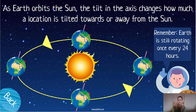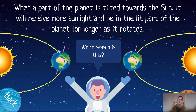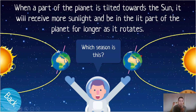We spin within those 24 hours as well as moving around the sun, so let's look at how that affects us in terms of the seasons. When part of the planet is towards the sun, it's going to receive more sunlight, therefore it's going to be hotter, and that part of the planet will be lit up for longer as it rotates. So here it's the closest to the sun — what season do you think it's going to be?